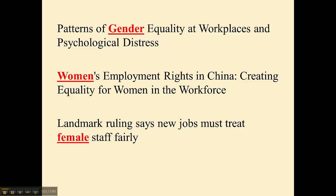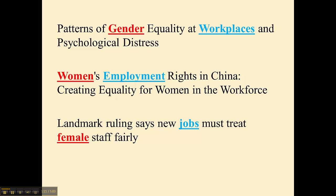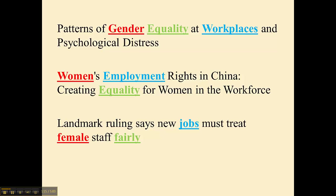For example, they all have the idea of gender, but they do not use the same word for it. Same thing with the idea of the workplace — workplace, employment, jobs — and equality or fairness. They all have these things in common and they are all relevant to my search. But I would have to do a bunch of different searches trying to find all of these articles if I have to use these exact words. So how can I do one search and find all of them at the same time?